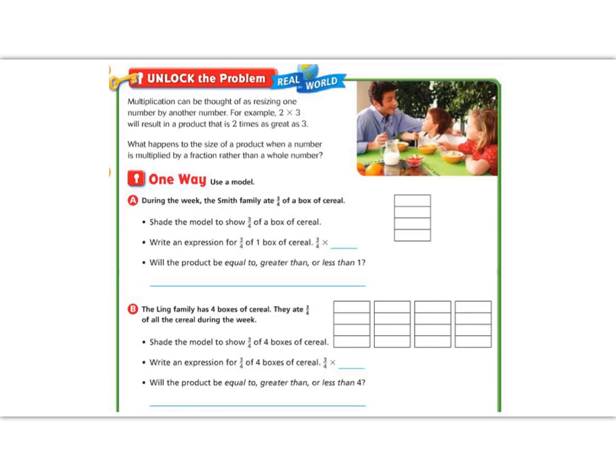Let's show this in a model. During the week, the Smith family ate 3 fourths of a cereal box. Shade the model to show 3 fourths of the box. So here's our box — it's split into 4s, and we're going to shade 1, 2, 3 of them. Write an expression for 3 fourths of one cereal box — that would be 3 fourths times 1.